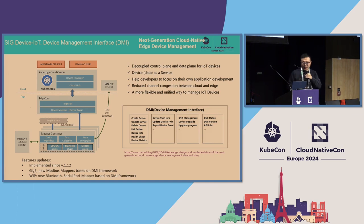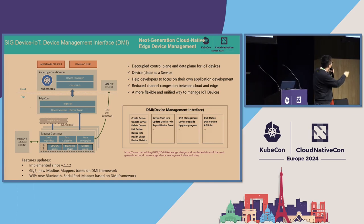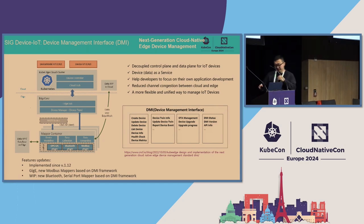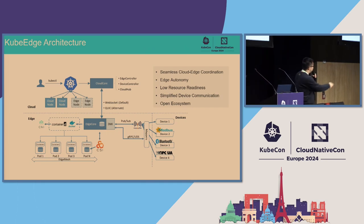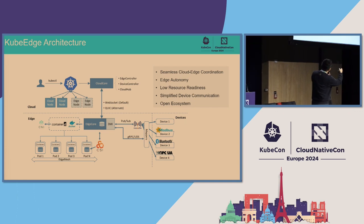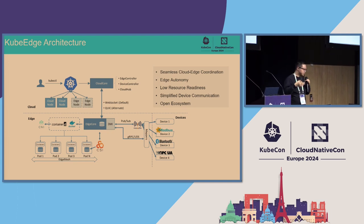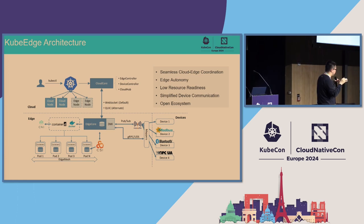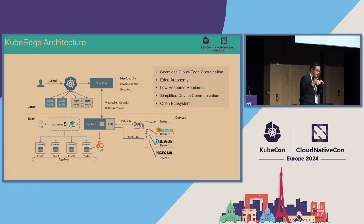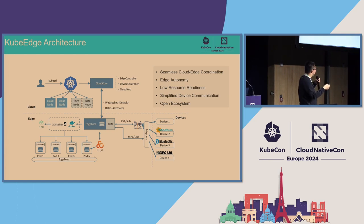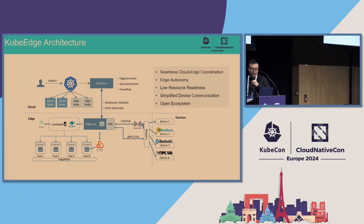The next part is about IoT device management. We build a framework to manage IoT devices from cloud to edge. We build APIs based on Kubernetes CRDs so users can use the Kubernetes API to control edge devices connected to edge nodes. We also build configuration rules from the cloud to control where data generated by edge devices gets published — to an MQTT broker, a database, or other applications.